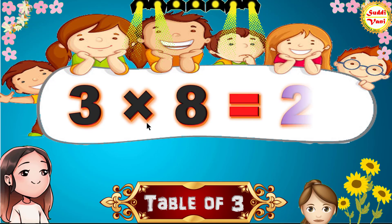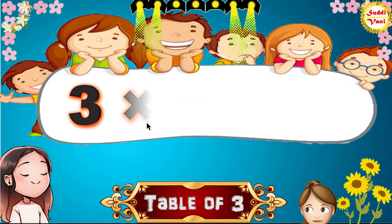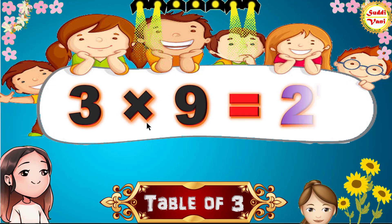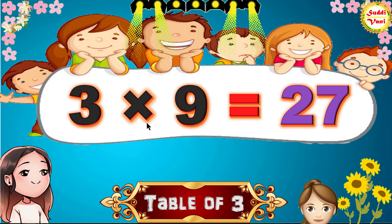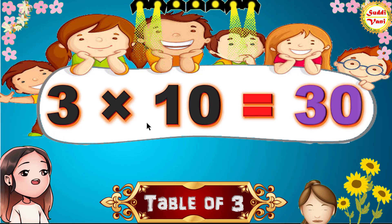3 8's are 24, 3 9's are 27, 3 10's are 30.